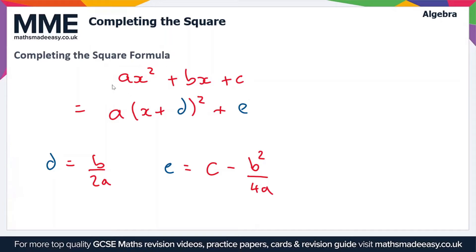So when we put this expression ax² + bx + c into this form, this is known as completing the square. You don't specifically have to remember the values of d and e here. These are just formulas that can help you if you want to remember them, but there are other ways to work these out and we'll go through those in the next video.